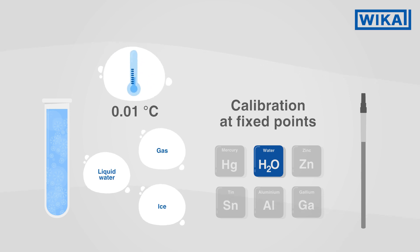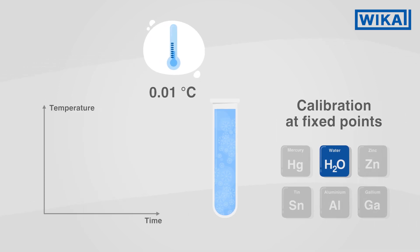The point is defined at exactly 0.01 degrees Celsius. In order to reach the triple point, a time-consuming and complex procedure is needed. Once reached, the temperature remains stable at the triple point for a long time.